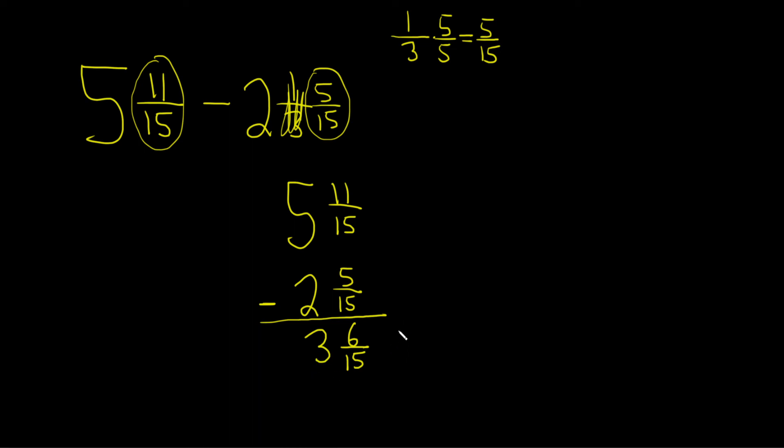The last thing to do is maybe realize that we can simplify this. Let's see. 3 goes into 6 twice, so this is 3 and 2 over, and 3 goes into 15 five times. So we get 3 and 2/5 as the answer.